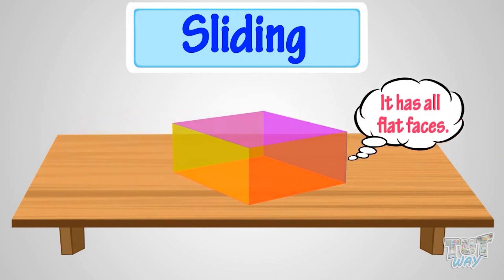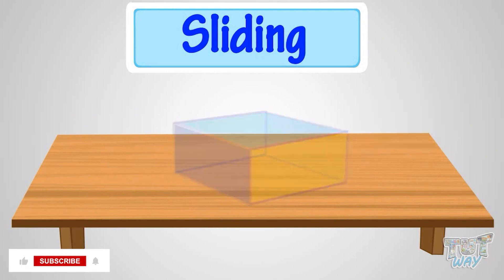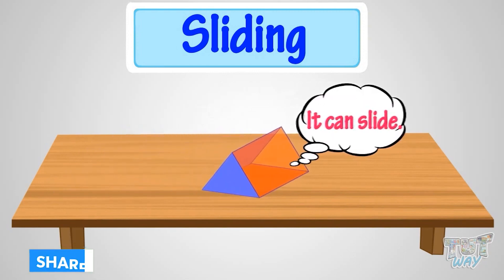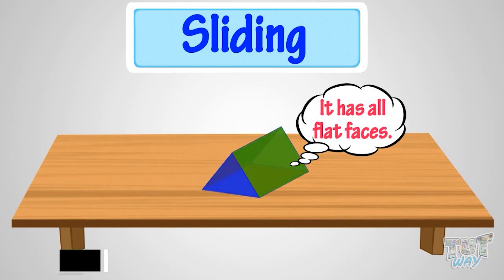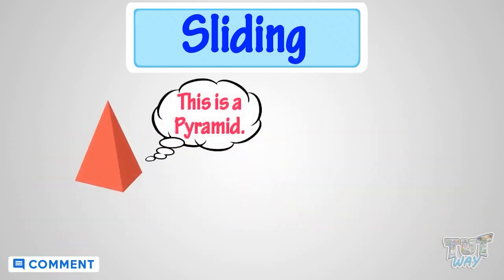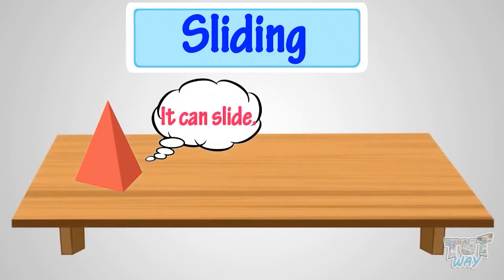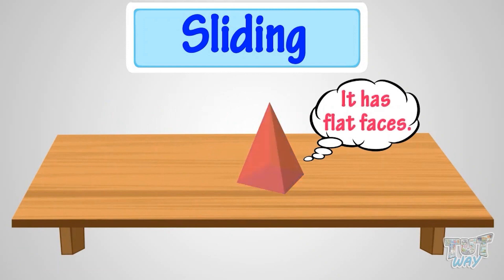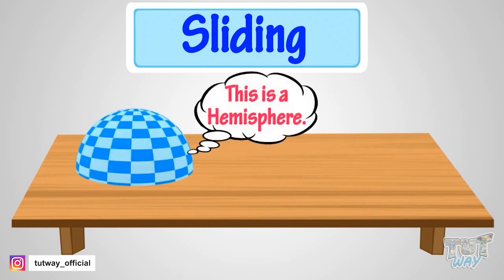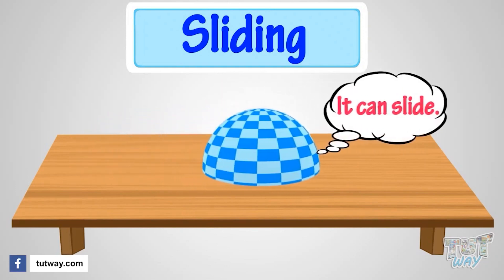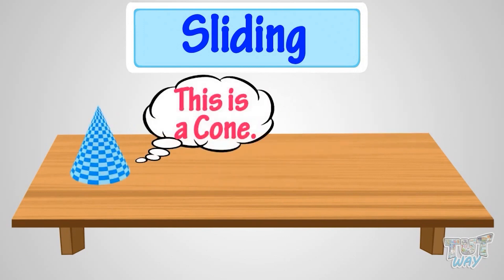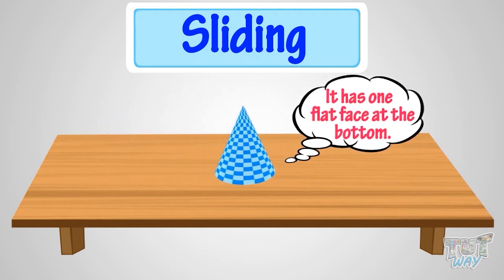This is a prism — it can slide as it too has all flat faces. This is a pyramid — it too can slide as it has flat faces. A hemisphere can slide as it has one flat face. A cone can slide as it has one flat face at its bottom.